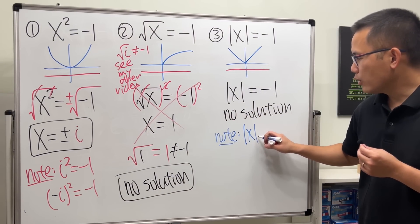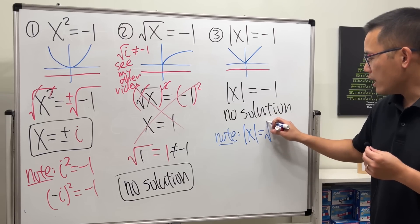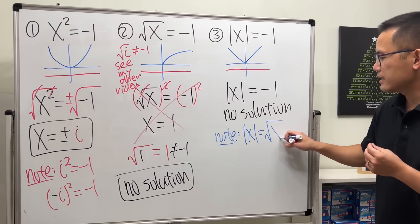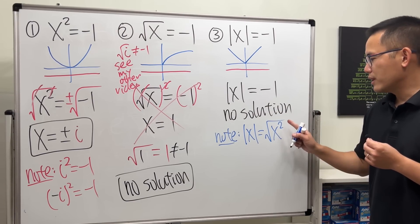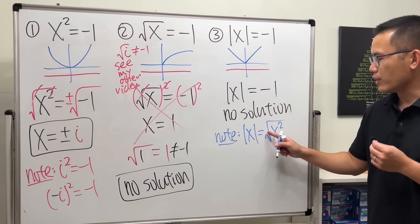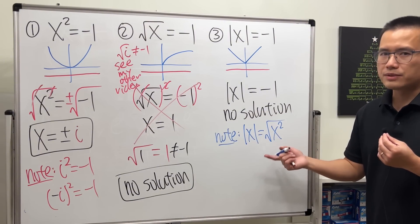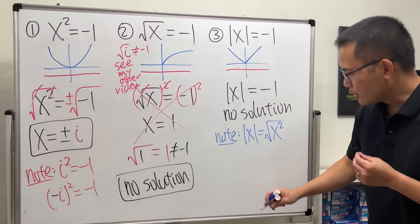Well, one thing I would like to show you though - note: absolute value of x can also be looked at as square root of x squared. When you cancel the square root and the square, you technically end up with absolute value of x.